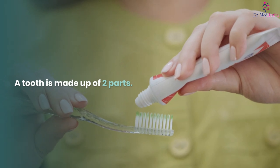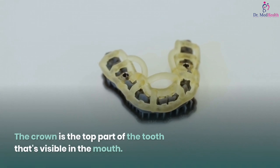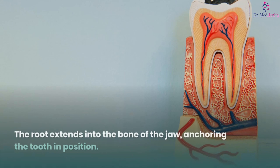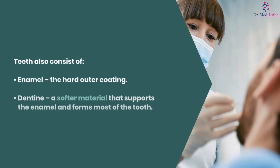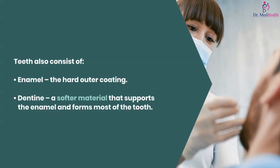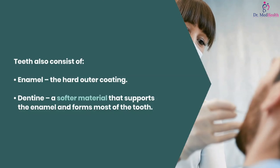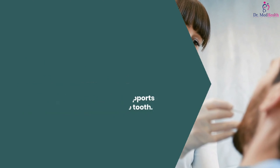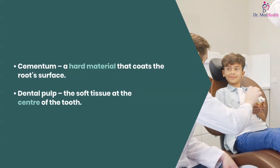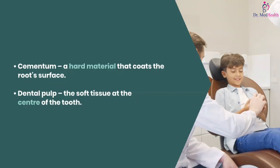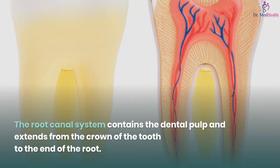Tooth Structure. A tooth is made up of two parts. The crown is the top part of the tooth that's visible in the mouth. The root extends into the bone of the jaw, anchoring the tooth in position. Teeth also consist of enamel, the hard outer coating; dentine, a softer material that supports the enamel and forms most of the tooth; cementum, a hard material that coats the root's surface; and dental pulp, the soft tissue at the center of the tooth.